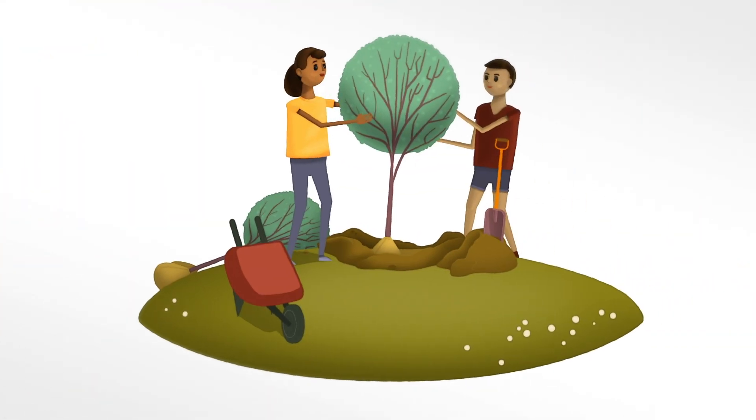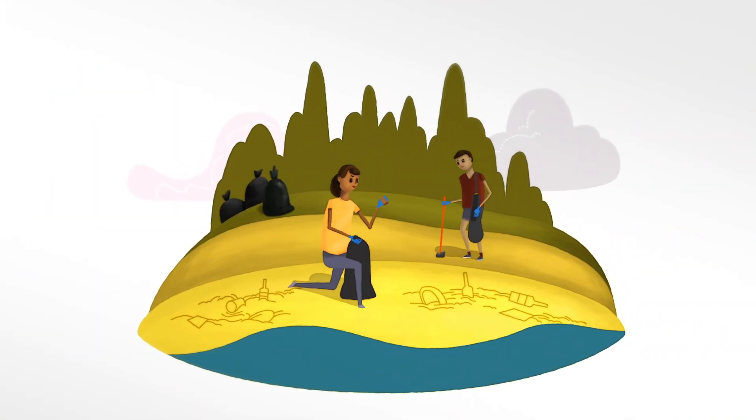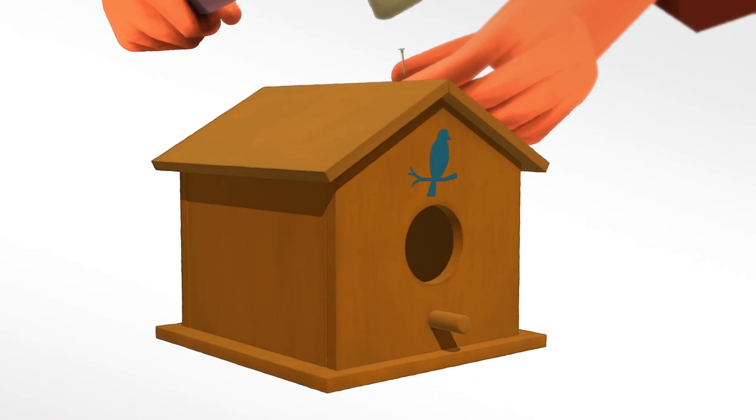Here's more. Plant a tree, or two, or ten. Clean up a field, or a beach, or a pond. Create habitats like a bird house, a bat house, or a pollinator garden.